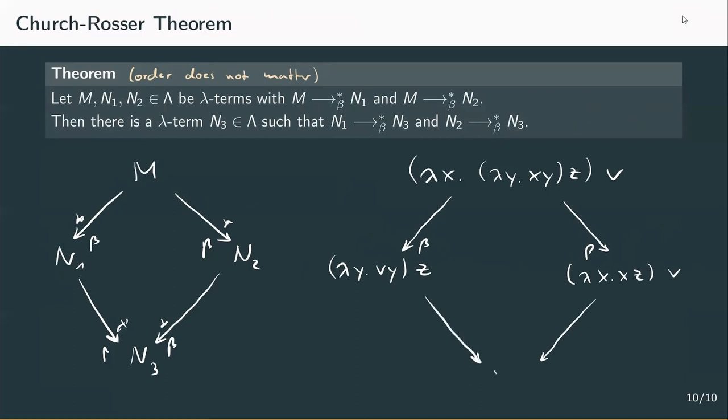We defined beta reduction and beta conversion, which are both needed to perform computation and simplification on lambda terms. After that, we introduced the beta normal form — basically the result of a term — and observed that some lambda terms have normal forms and some don't. There are even terms which we can reduce infinitely without reaching a normal form, even though they have one. In the next video, we're going to see practical examples: constructing natural numbers and defining simple functions like addition, subtraction, and even the factorial function. Thank you very much for watching, and see you in the next video!